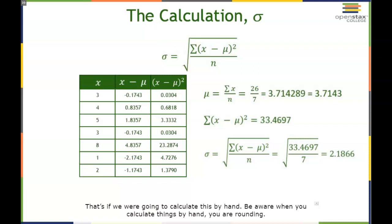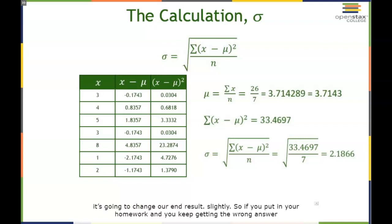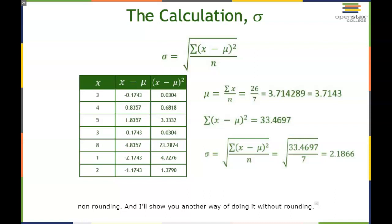That's if we calculate by hand. Be aware that when you calculate by hand, you are rounding. We used 3.7143 instead of the full 3.714289, so rounding periodically will slightly change your end result. If you keep getting wrong answers on homework, it's probably because you rounded somewhere and the computer expects a non-rounded answer. I'll show you another way to do it without rounding.